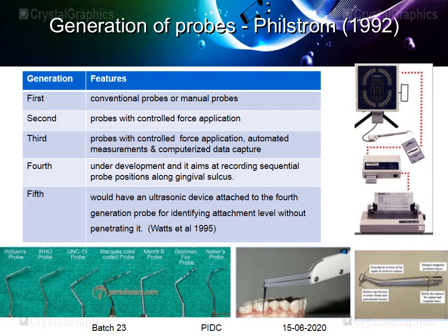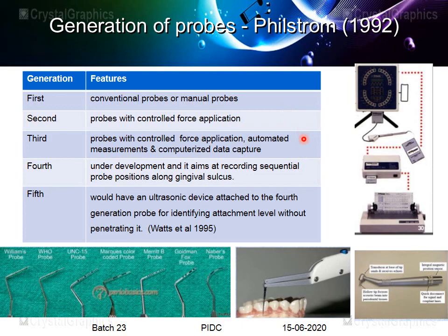Filmstrom categorized five generations of probes. The first generation comprises conventional manual probes. The second generation has controlled force application. The third generation adds an automated device for measurements and computerized data capture. The fourth generation aims at sequential probe positioning along the gingival sulcus. The fifth generation adds an ultrasonic device to the fourth generation probe for identifying the attachment level without physically penetrating it. The fourth and fifth generations are still in developmental stages; clinically we use first generation probes, while research uses second and third generation probes.